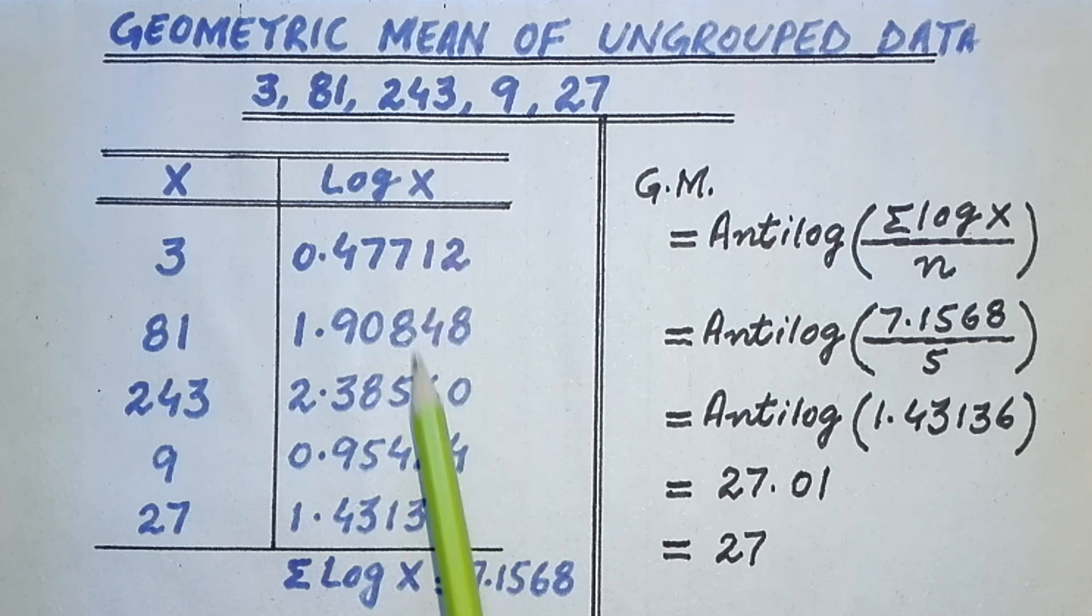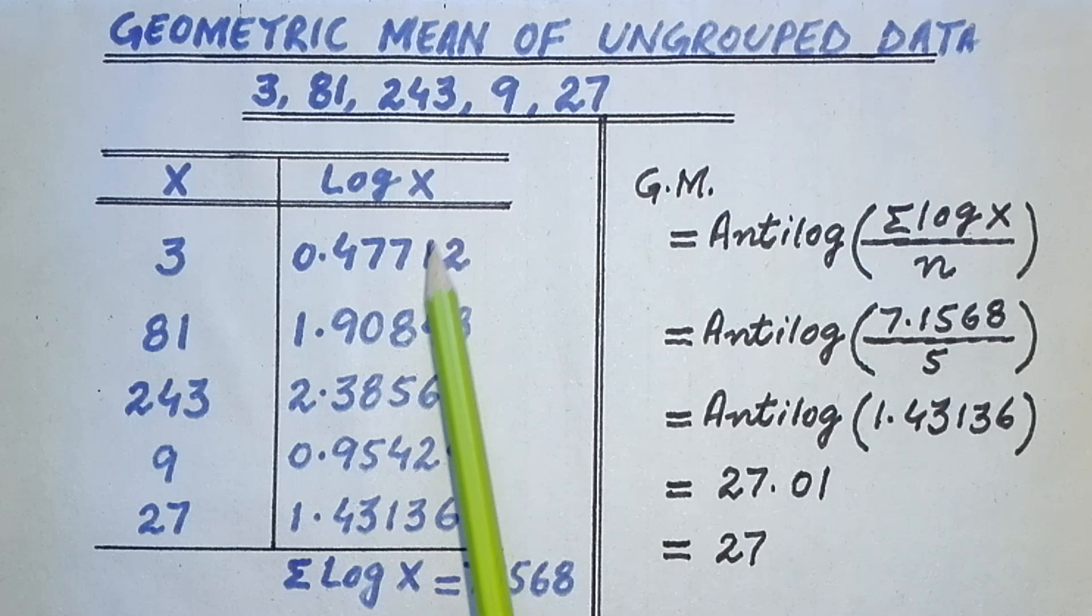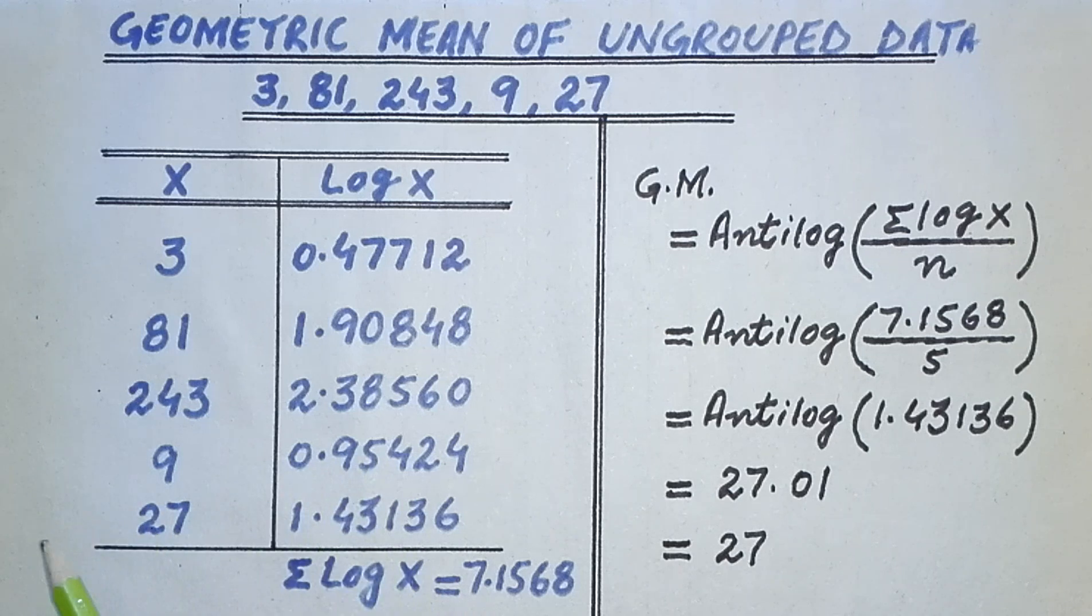That's how we can find the value of log x. After this column, we add all these values of log x to find sigma log x. After completing this table, we apply the formula which is GM equals antilog of sigma log x over n.